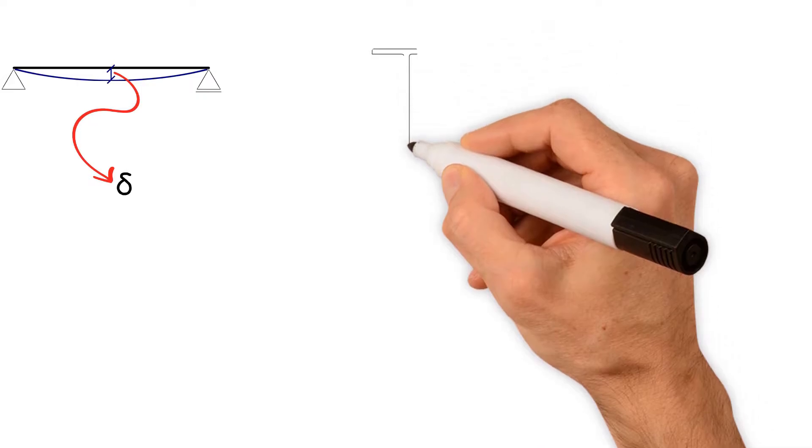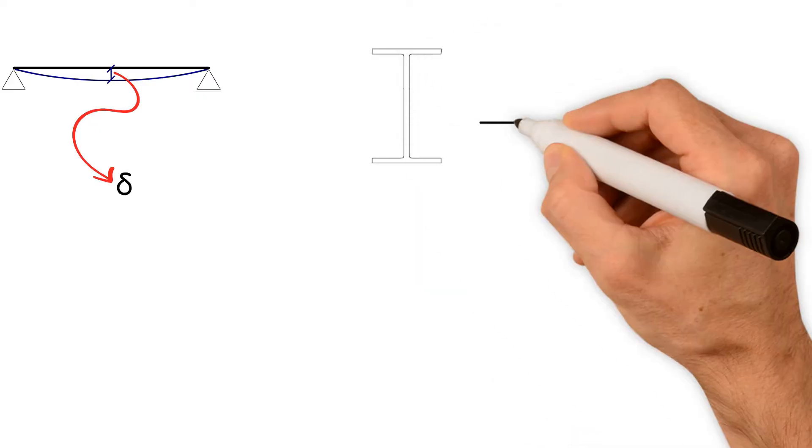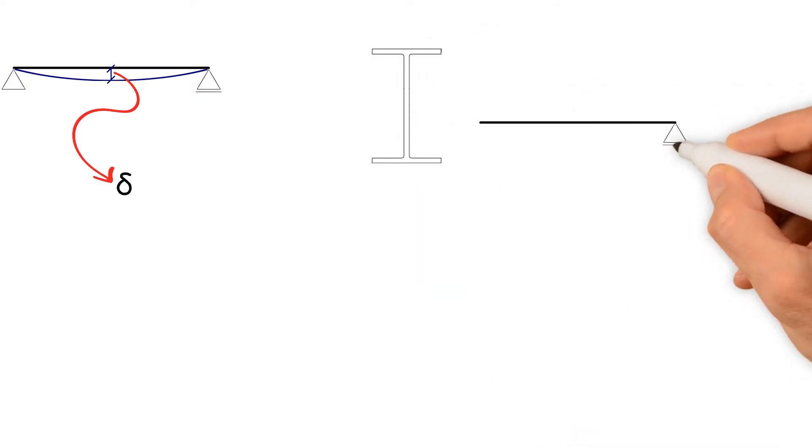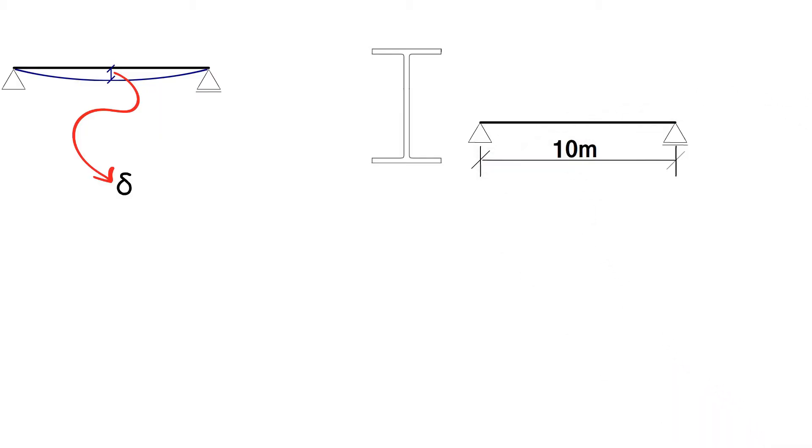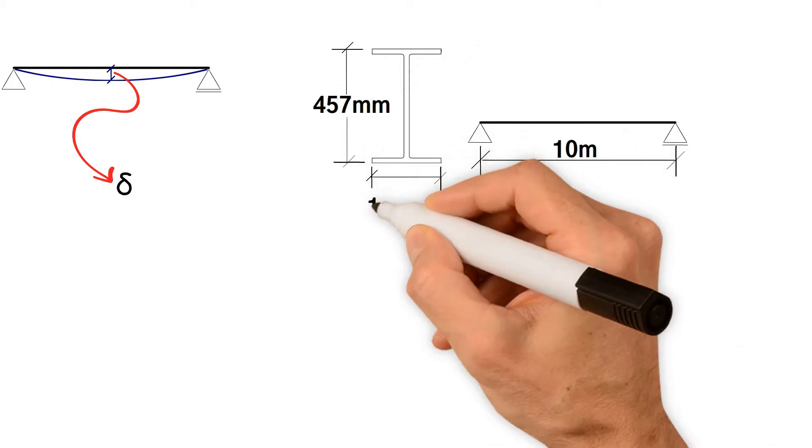Here we have a universal beam cross section. Here we have a side view of the beam which is being supported at each end. Say it's 10 meters between supports. The depth is 457 and the width is 152 millimeters.